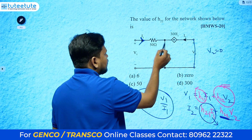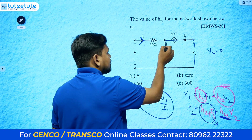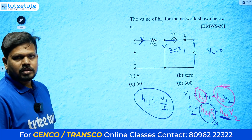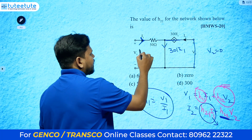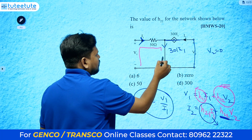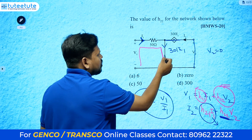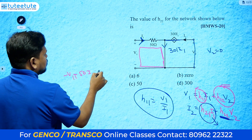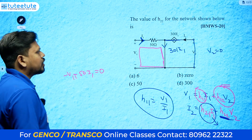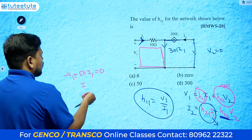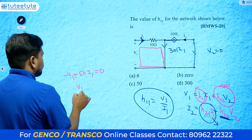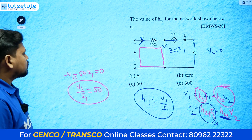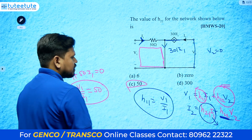With the output short-circuited, i1 current flows through the circuit and the dependent source 300*i1 also contributes, so combined current 301*i1 flows. Writing KVL: minus v1 plus 50*i1 plus 50*i1 equals 0 — giving v1 by i1 equals 50. So h11 equals 50 ohms.